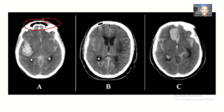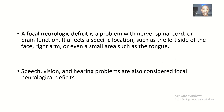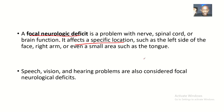You can see that on this side there's a deficit at the frontal part of the brain, and this deficit is specific to an area of the brain. A focal neurological deficit is a problem with nerves, spinal cord, or brain function. It affects a specific location such as the left side of the face, the right arm, or even a small area such as the tongue. It affects the nerves, but the area where the nerve supply is serving also suffers the effects.